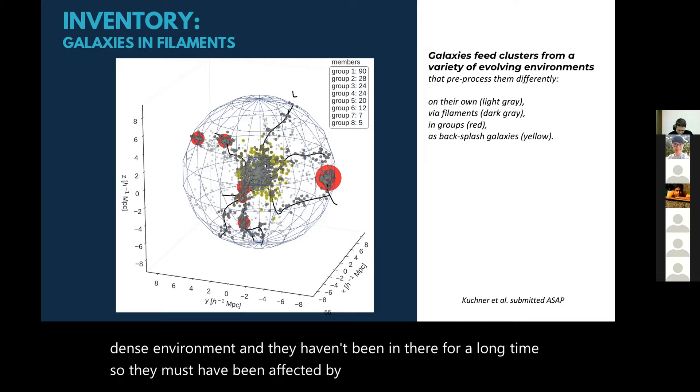So it is still valuable, I think, to add to that conversation just because it is used so much. Now whether it's useful to call it pre-processing, or whether it's something else is another topic. But I find it important and valuable to make clear what we mean by group, and it's an exceptionally dense environment and they have been in there for a long time. So they must have been affected by it before they reach the cluster. Okay, thank you. So last chance, any more questions?